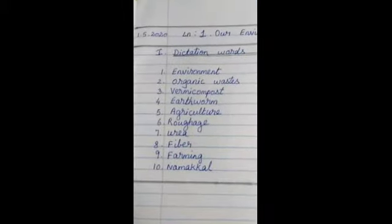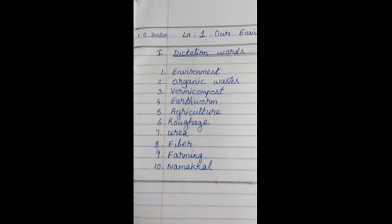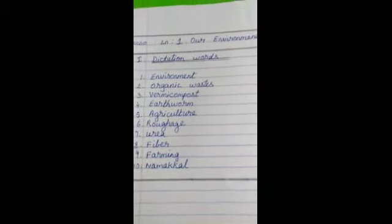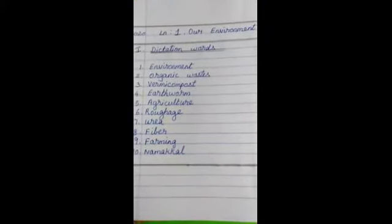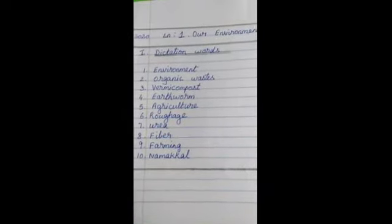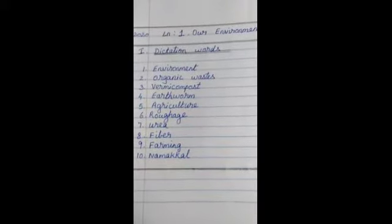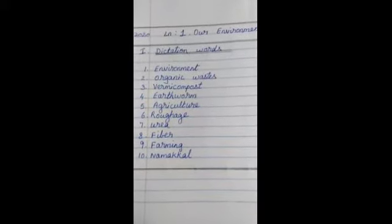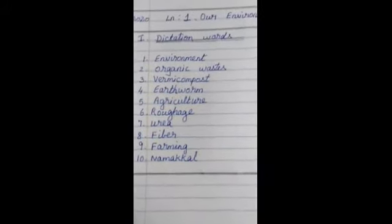Now take a page. Put today's date, 1-5-2020. Lesson number 1, Our Environment. Take a scale and pencil, draw the line how I draw it in this video. And then put Roman numeral 1. Education words. Put the lines for education words and write the first one.